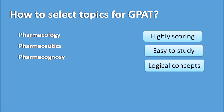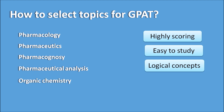The next subject, pharmacognosy, is a highly scoring subject in the GPAD. Many aspirants get good scores from pharmacognosy because all the questions are very direct. The next is pharmaceutical analysis — a logical subject which includes both direct as well as logical questions like spectral interpretation. Finally, organic chemistry was recently added to the GPAD syllabus and also gives a good score. Now let us see how the questions appear in these subjects along with examples.